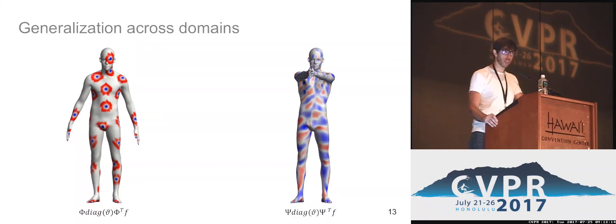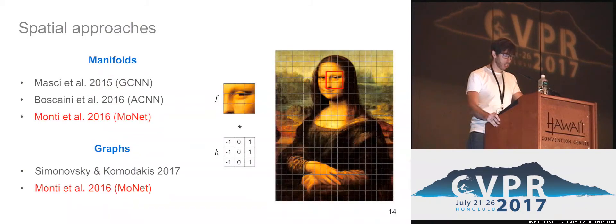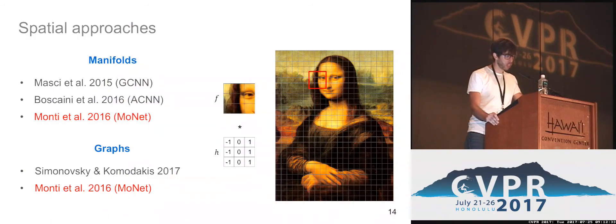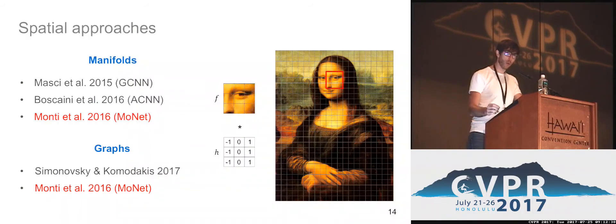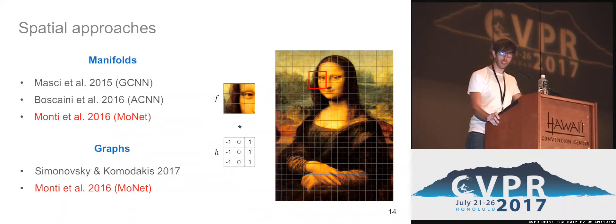In order to extend convolution in a consistent way across domains, we need to resort to a second family of approaches: spatial approaches. The main idea is to apply a template on some neighborhood representation obtained by mapping the neighbors onto some finite fixed structure. This is also the main idea behind convolution when applied over images, where the neighborhood representation is a patch extracted around a given point and the template is the filter applied. This is also the main idea behind our approach, which can be categorized as a spatial solution.